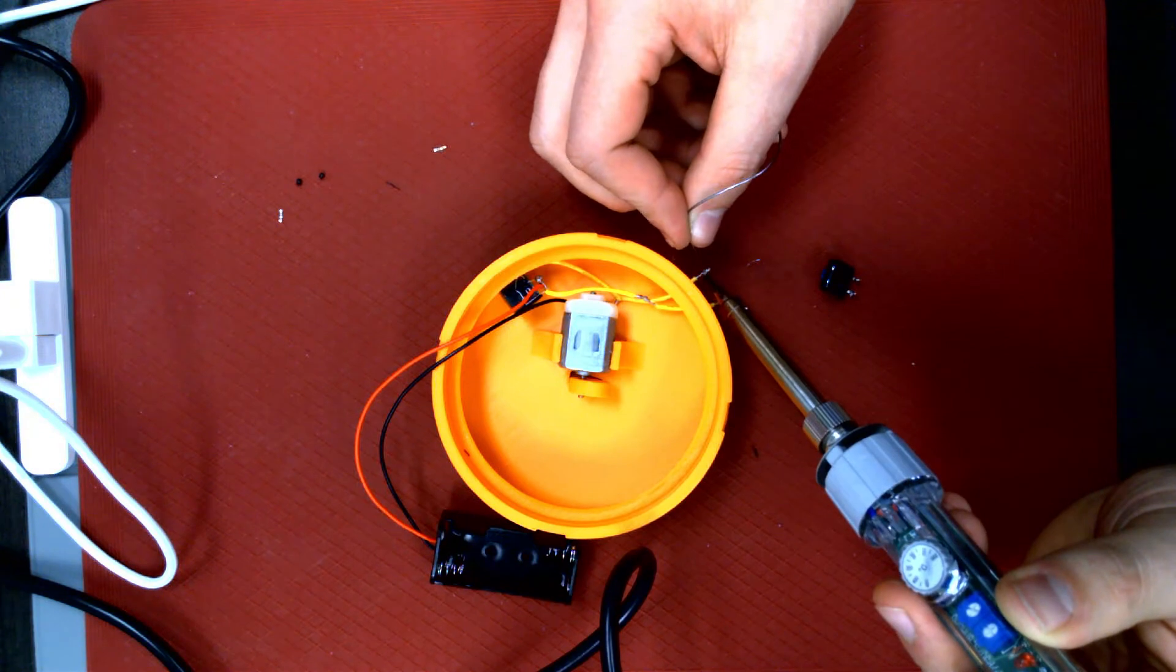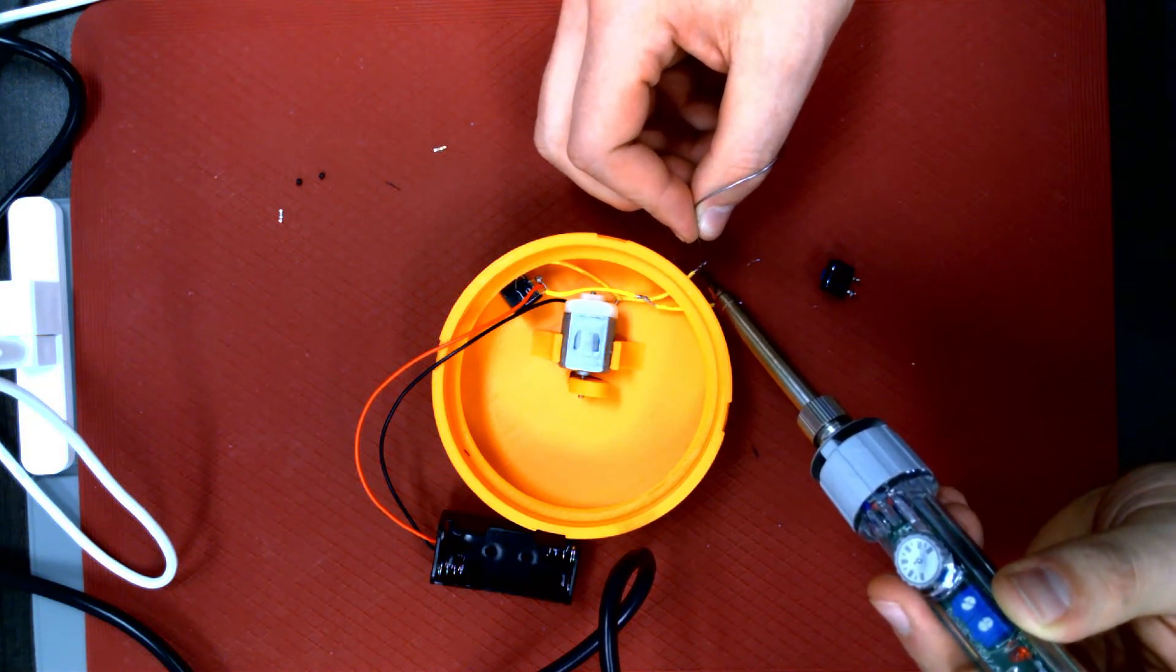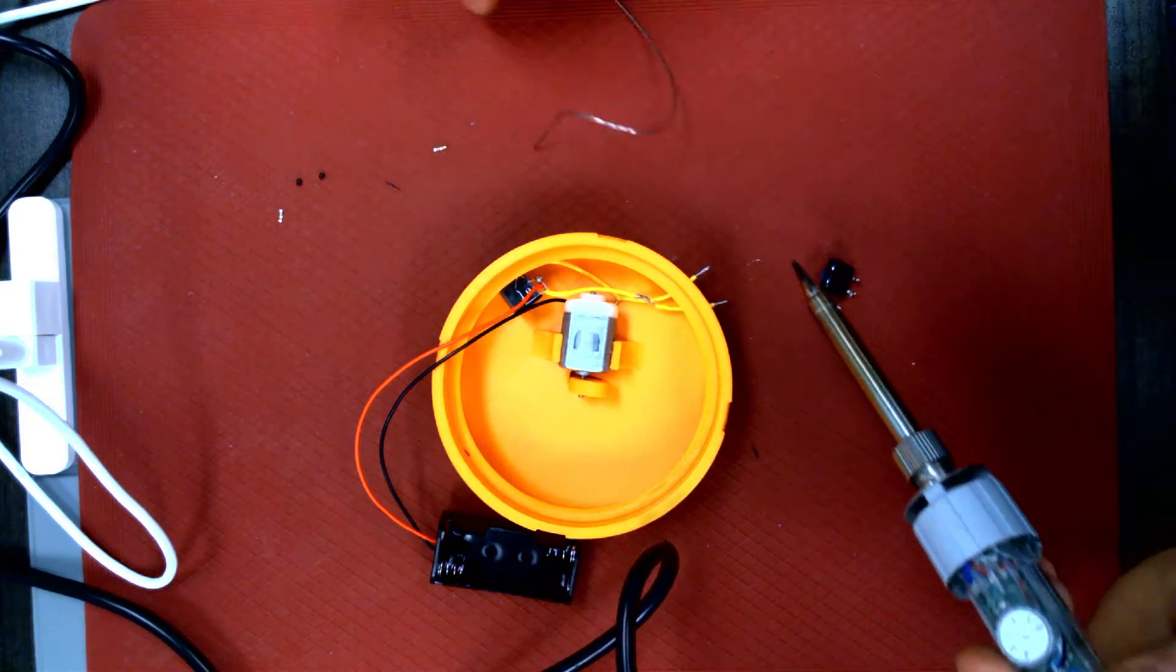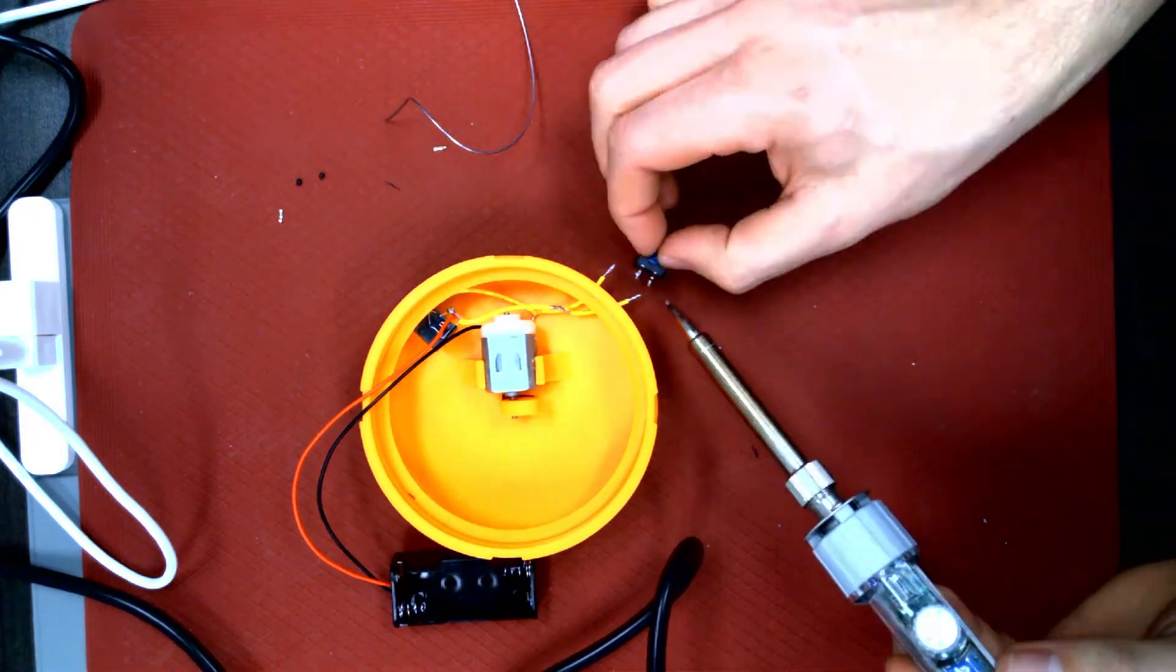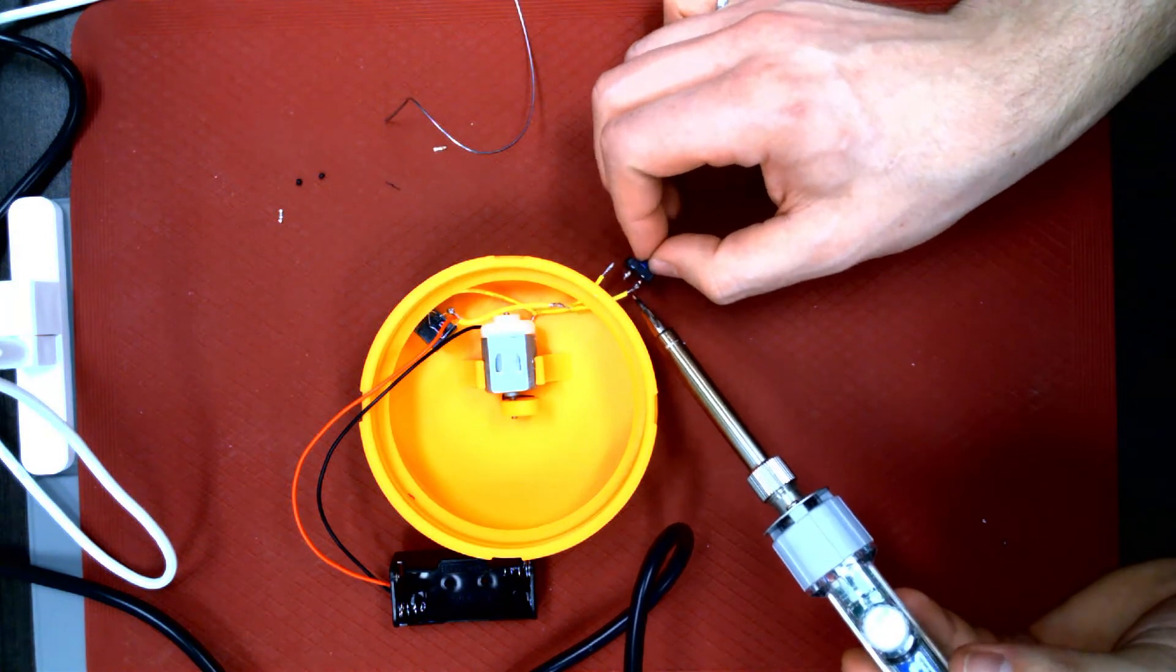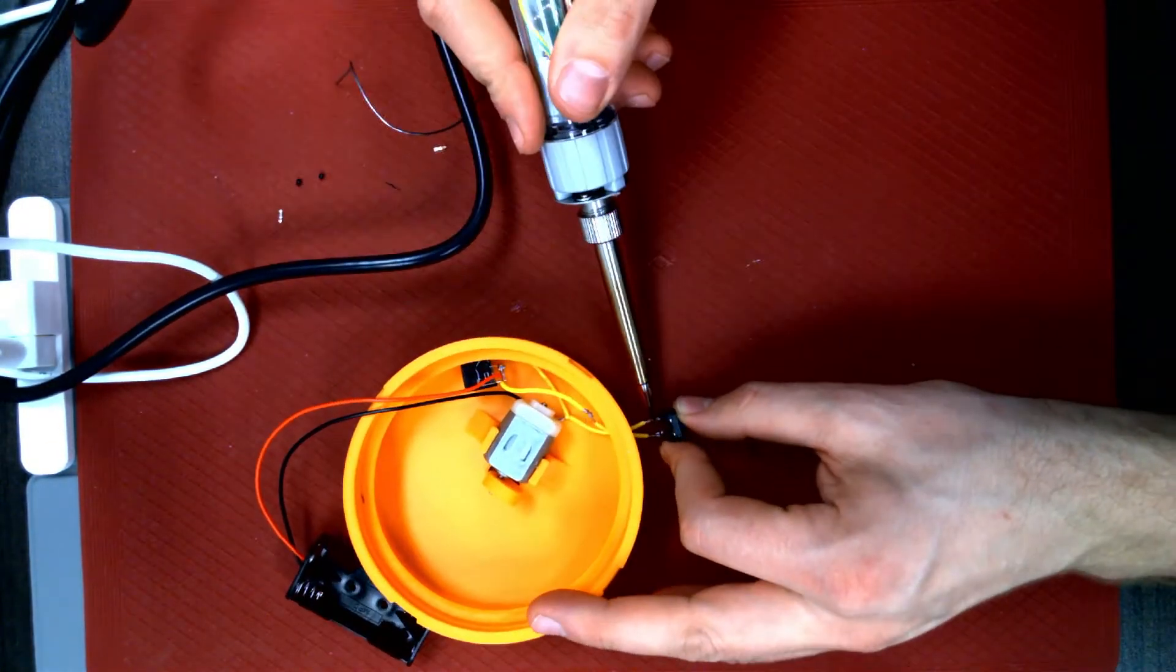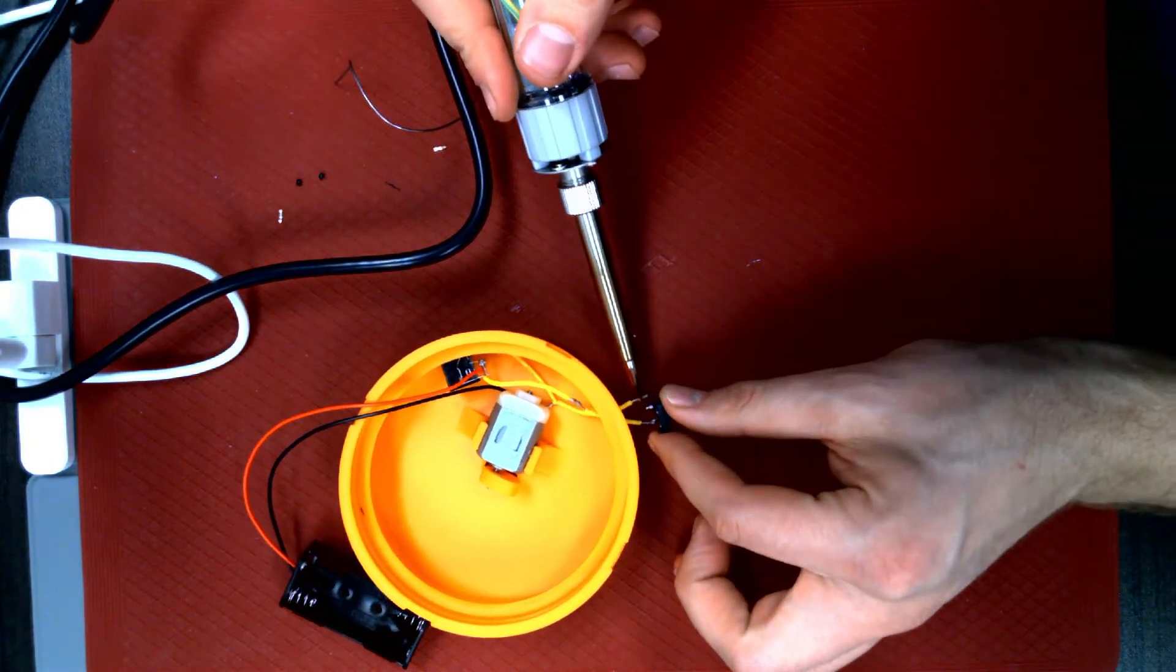Once you have tinned the switch wire and pin, simply push one wire onto a pin and add solder if necessary so it holds. Then do the same with the remaining wire and pin. Be careful not to melt the plastic base during this process.